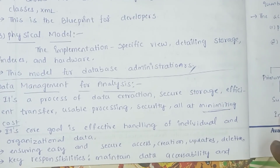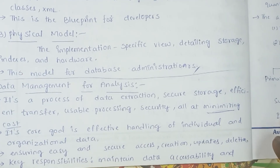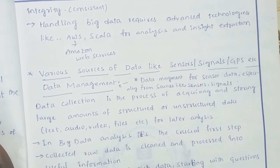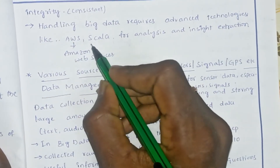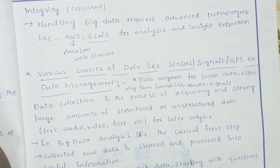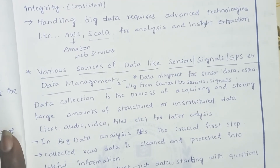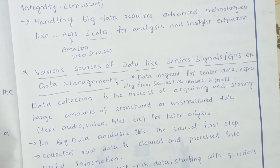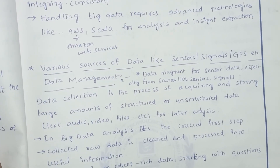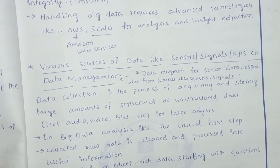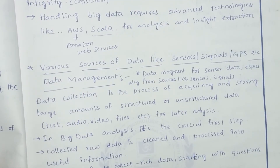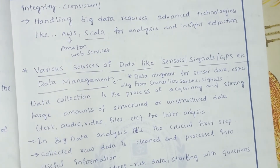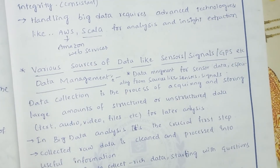Key responsibilities in data management for analysis include maintaining data accessibility and integrity. Handling big data requires advanced technologies like AWS (Amazon Web Services) and Scala for analyzing and insight extraction. Big data refers to datasets that are in a huge format, and these advanced technologies are needed to process them effectively.